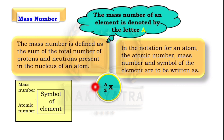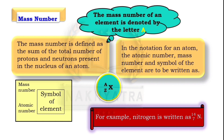So X represents the symbol of the element, A represents the mass number, and Z represents the atomic number. For example, nitrogen is written as N with 14 above (mass number) and 7 below (atomic number).